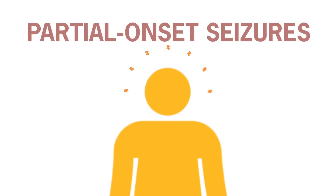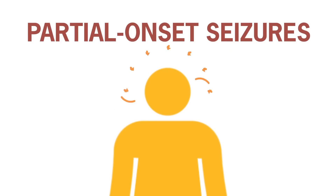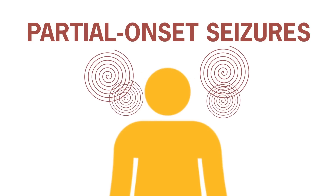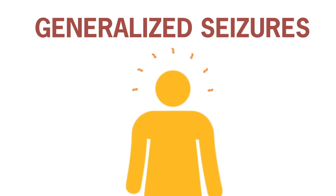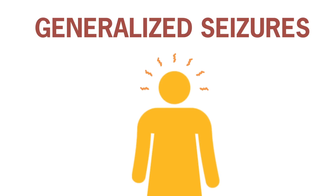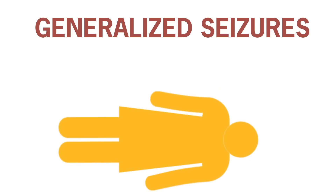As infants and children with TSC grow up, many continue to experience seizures, including partial onset seizures, which are characterized by tingling sensations, visual distortions including hallucinations, and in some cases loss of consciousness and unresponsiveness. Generalized seizures are categorized by the stiffening and jerking of the limbs, falling to the floor, and impaired consciousness.